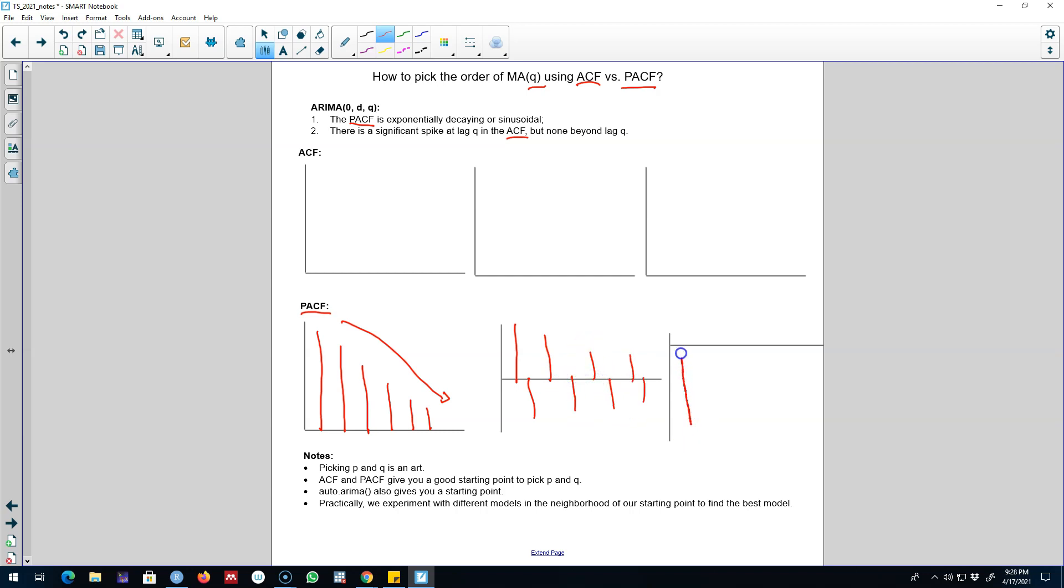Now it can also move towards zero with negative correlation coefficients in this fashion. Nevertheless, again, in all of these three cases, our partial autocorrelation graph is exponentially decaying.